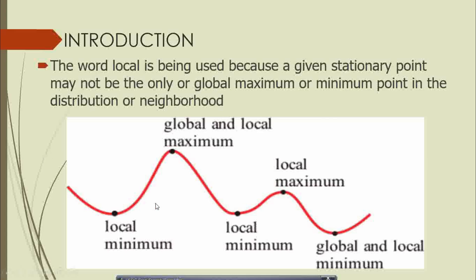For example, looking at this function sketched here, we can see that it has about three minimum points — a minimum here, another here, and another here. These are not the global minimum; there is one minimum point that appears to be the least of all, which we term the global minimum. The others are local minimums. The same applies to maximum points — we can identify a global maximum, which is the highest of all, as well as other local maximums within the neighborhood.